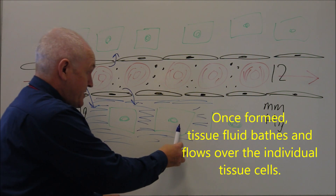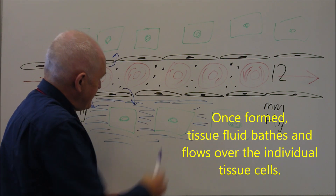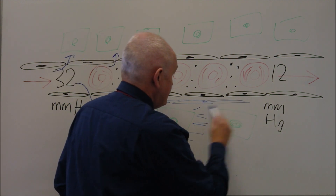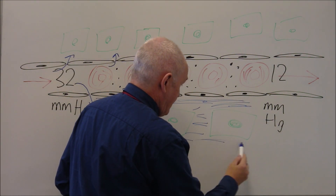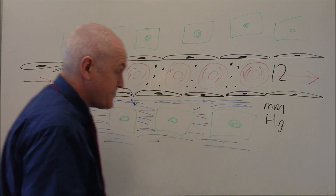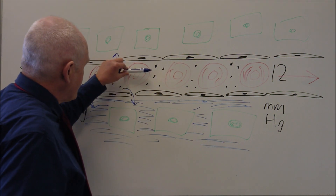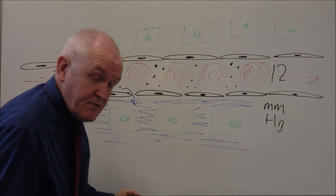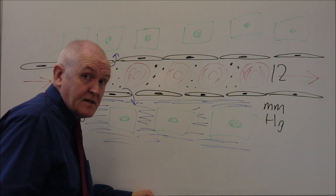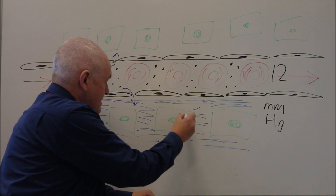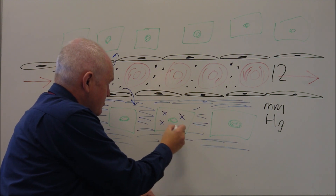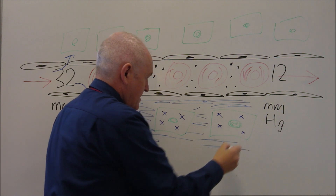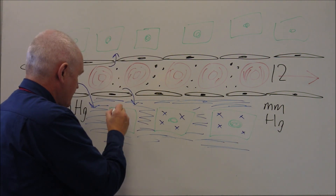There are also about 30-odd liters of fluid inside the cells as intracellular fluid. This shows quite nicely how body fluids are compartmentalized: intravascular fluid and interstitial fluid — both extracellular — and then the intracellular fluid inside the trillions of cells that make up the body.